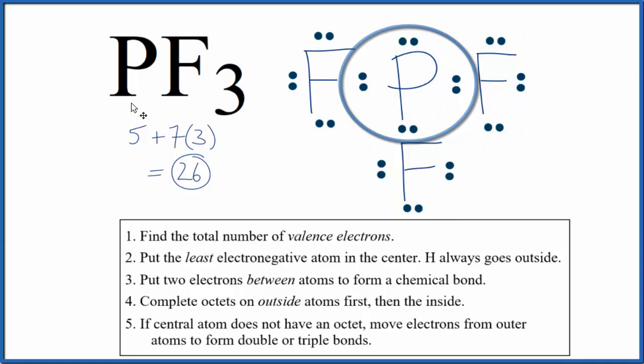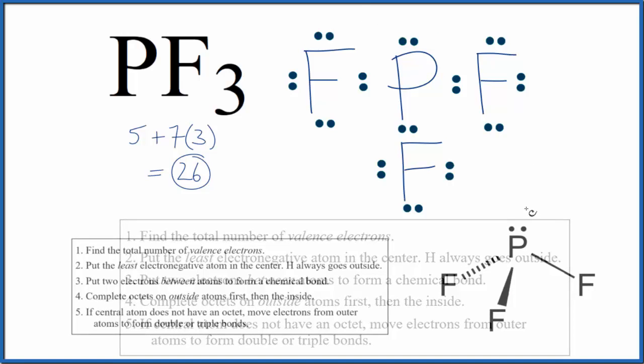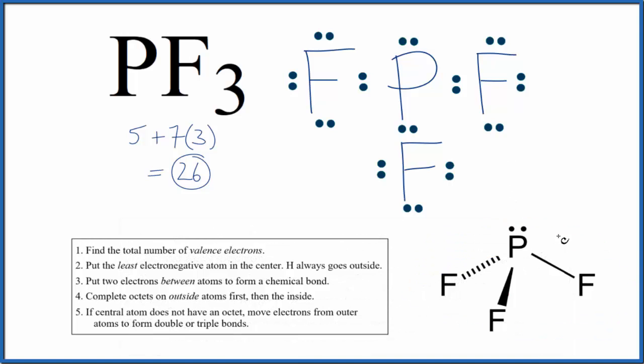This is the Lewis structure for PF3. If we looked at the molecular geometry for PF3, this lone pair of electrons here, it actually pushes the fluorines down. So we end up with a trigonal pyramidal molecular geometry for PF3. If you need more help with that, there's a link at the end of this video.